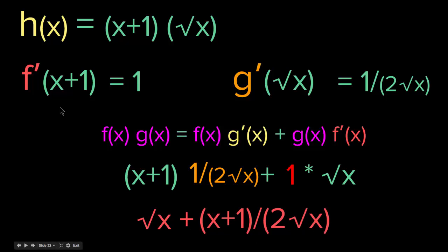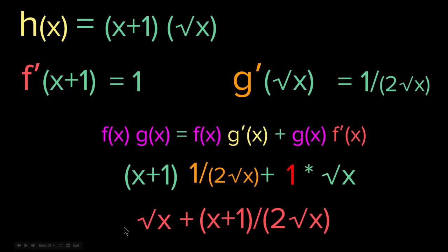We don't multiply the first function's derivative times the second function's derivative — in that case, we would get 1 over 2 square root of x, and that is not the rule. The rule is the first function times the derivative of the second, plus the second function times the derivative of the first. So for x + 1 and square root of x, we get h′(x) equals square root of x plus (x + 1) over 2 square root of x.